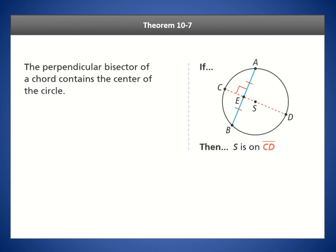The final theorem for chords states that the perpendicular bisector of a chord — any line segment that cuts the chord in half at a 90 degree angle — must contain the center of the circle. This is useful because you can extend that line segment and know it passes through the center.